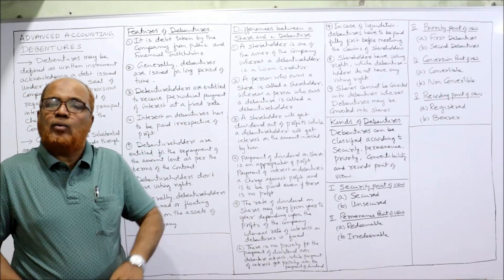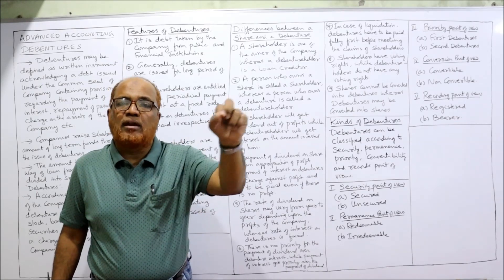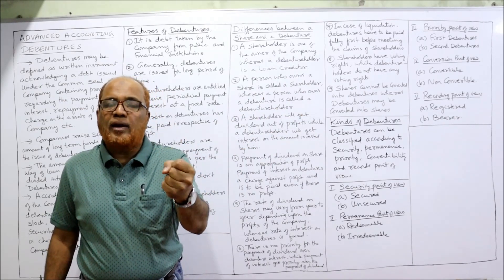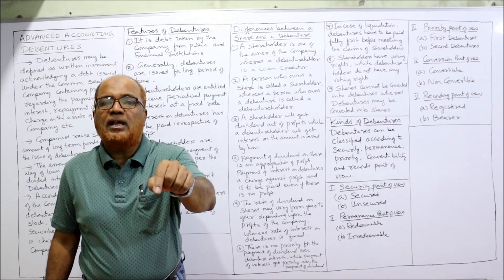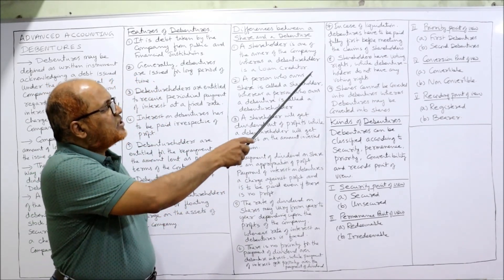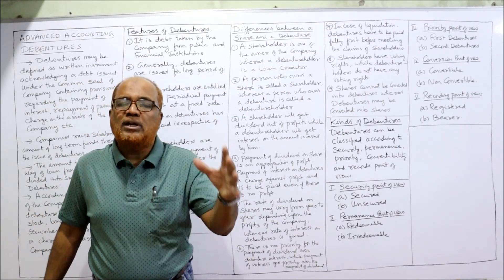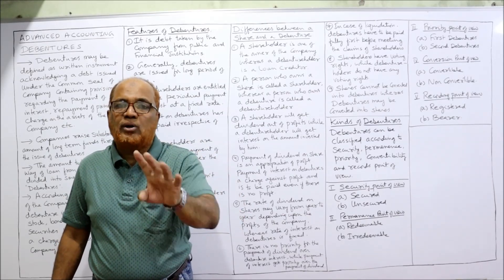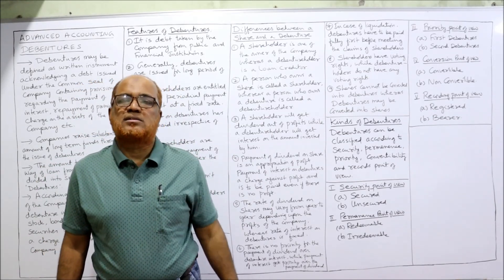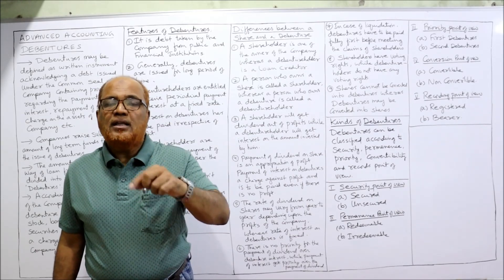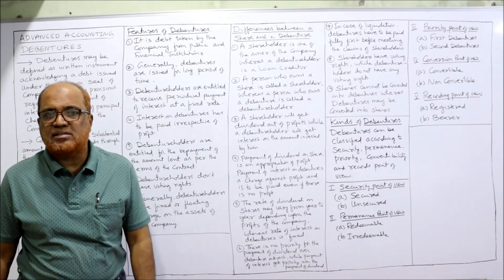In case of liquidation — when the company is wound up — first of all debenture holders must be returned their capital. Debenture holders have priority in getting back their money; only after paying debenture holders, if any amount remains, does it go to shareholders. Shareholders have voting rights in important decisions of the company, whereas no voting rights are available to debenture holders. Lastly, shares cannot be converted into debentures, but there are convertible debentures — a type of debenture which can be converted into shares.